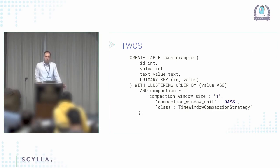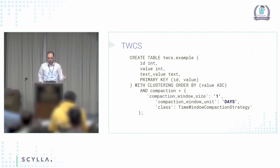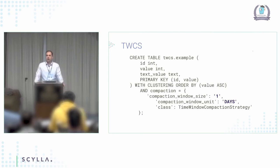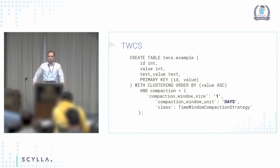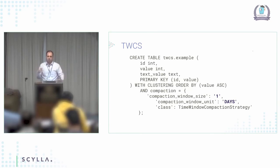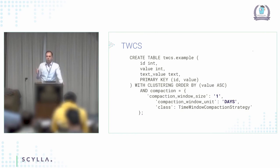How do you use time window compaction strategy? You typically specify the window size and its unit — for instance, four days — so everything that happened in the span of four days gets compacted together. Within those four days, I'll be doing size-tier compaction strategy inside that window. You keep accumulating and adding data, and there's no difference between size-tier and time window for the current window — in the current window I am just doing size-tier.